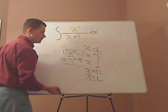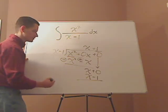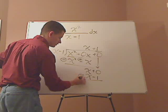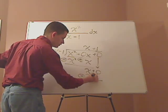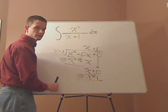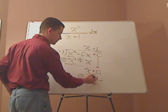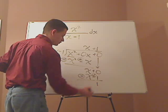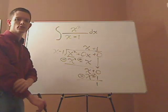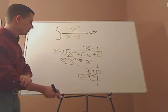And again, you change the signs. X minus x cancels out, and then you have 0 plus 1. That leaves you with a 1. So the remainder is 1.